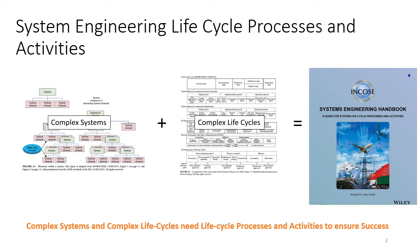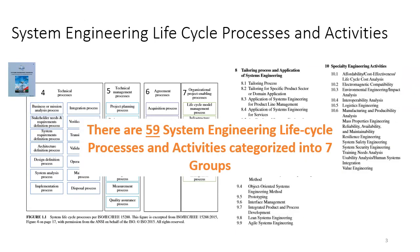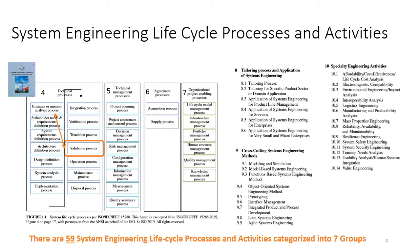The System Engineering Handbook encapsulates the best practices in system engineering processes and activities to develop complex systems that are developed and operated in complex life cycles. There are a total of 59 of these processes and activities that are organized into seven groups. The topic of this video is the validation process. It falls in the technical processes group that has the System Engineering V, and the validation process is related to the business or missions analysis process that defines the requirements with regards to the mission and the business.